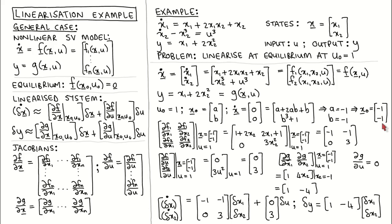The last step is to calculate the Jacobians and evaluate them at the equilibrium. For this matrix, we have to solve this Jacobian and then evaluate it at the equilibrium. For the top row of the Jacobian, we have to calculate the derivative of function f1 with respect to the states x1 and x2. We therefore look up our function f1 and calculate the derivative with respect to x1 and x2, which gives us the top row as shown over here. Similarly, the bottom row of the Jacobian is the derivative of function f2 with respect to the states, which results in this line. We now evaluate this matrix at the equilibrium states of x equal to minus 1 and minus 1, which results in this constant matrix.